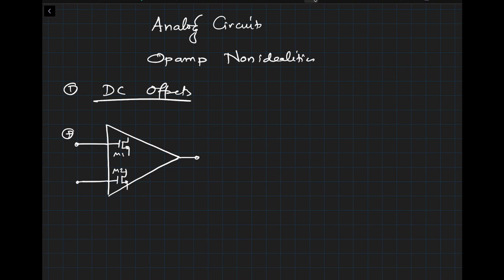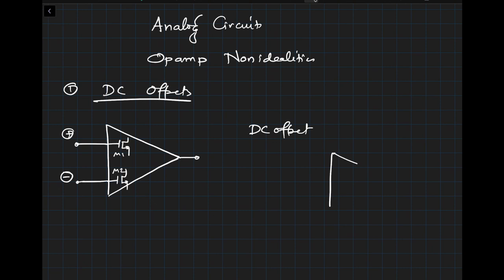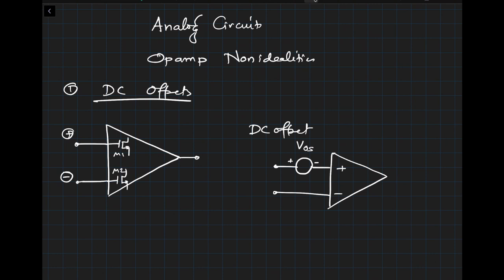We model the DC offset as follows: we show the ideal op-amp with plus and minus terminals, and insert a small DC offset voltage at the input. This offset voltage could be as small as microvolts, millivolts, or tens of millivolts, depending upon the types of devices used. We insert this offset voltage at the input of the op-amp to quantify the mismatch between the two inputs.